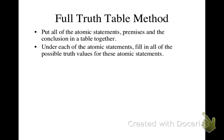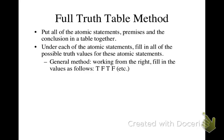Then, under each of the atomic statements, we're going to fill in all of the possible truth values for these atomic statements, and we'll do this in a very systematic way. The general method is, starting from the right, fill in the first column with truth values as follows: true, false, true, false, etc., until you have as many rows as you need in the truth table.